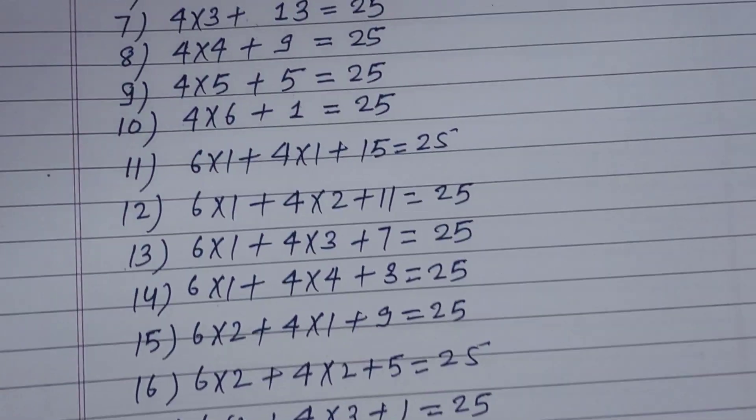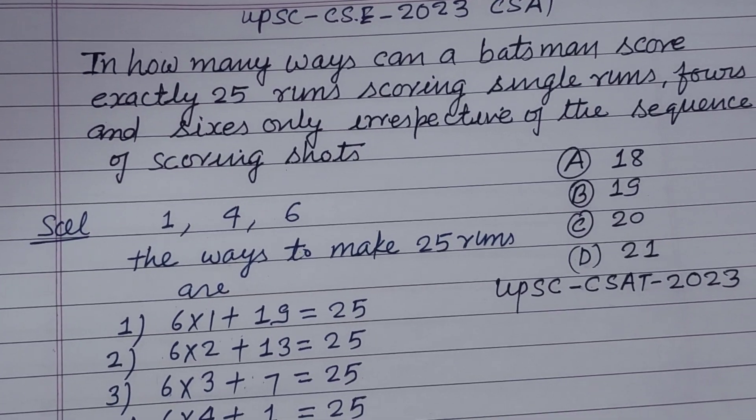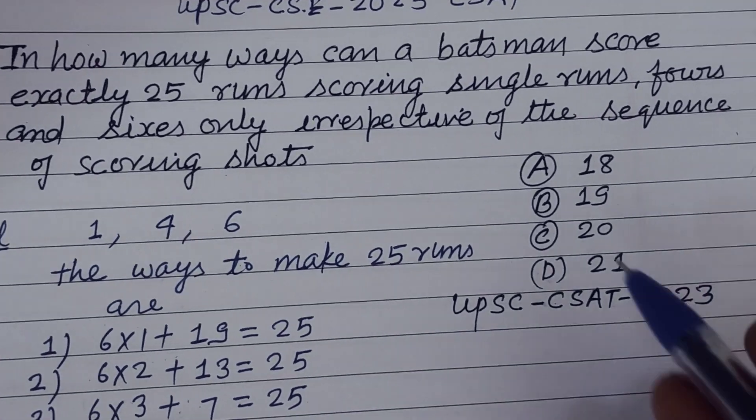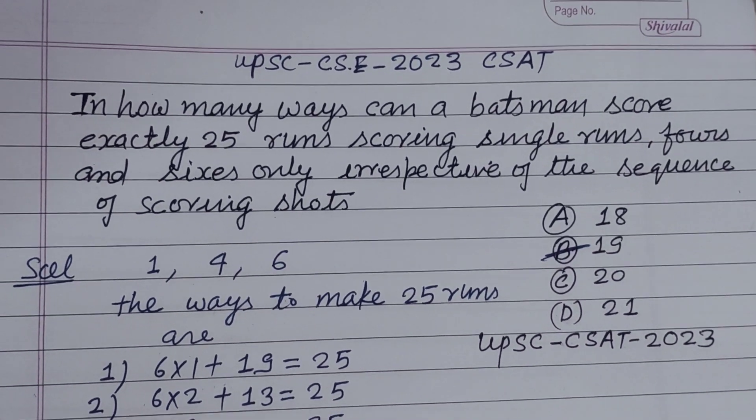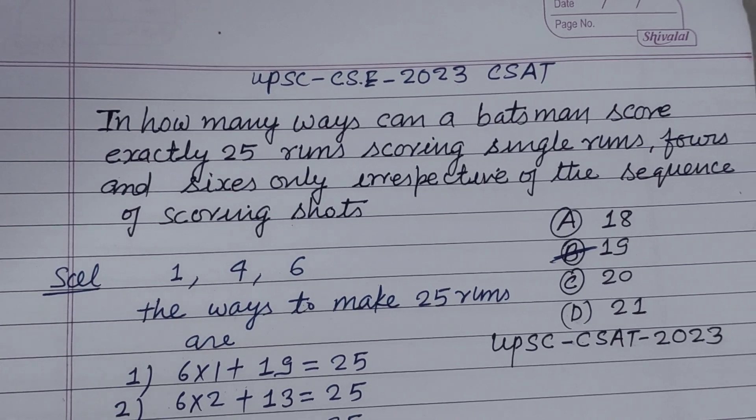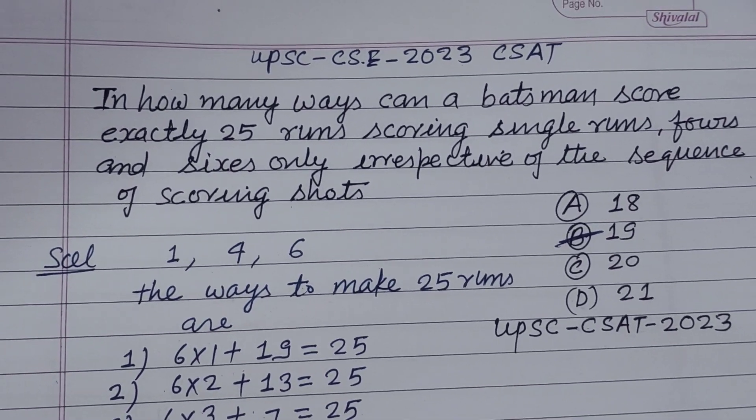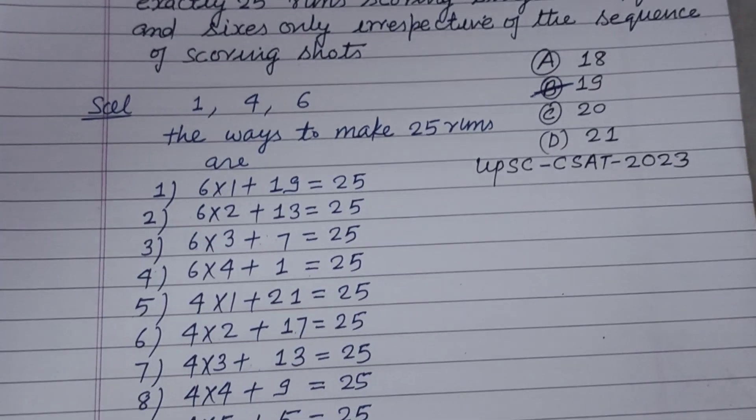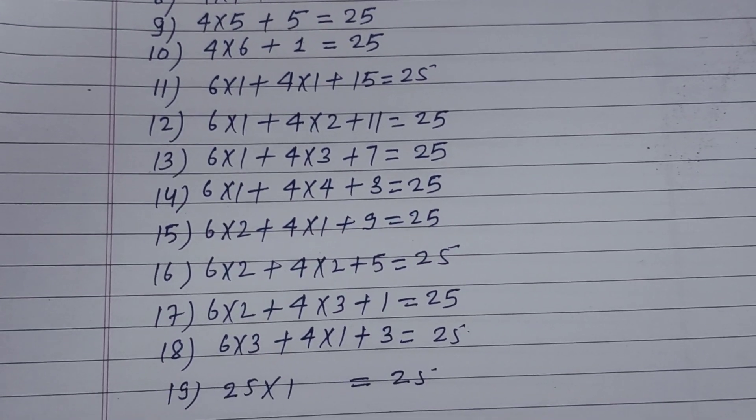Therefore the possible conditions are 19 in this question. So B is the correct answer of this question. Student, I hope you got it. Please like the video, subscribe the channel. Thanks for watching.